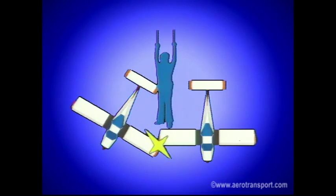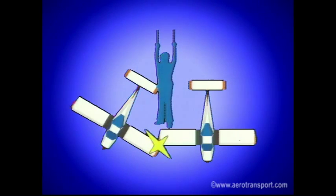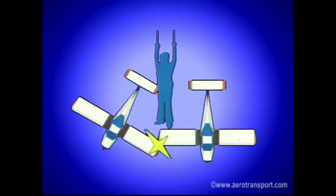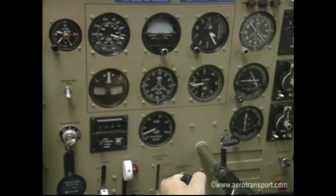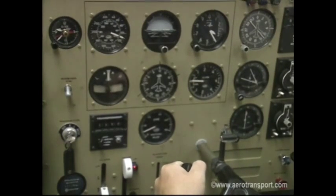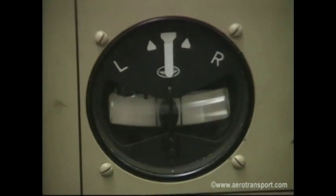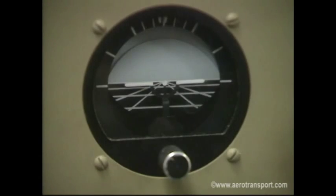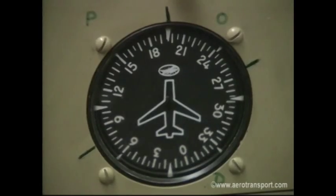Have outside help if you are taxiing on ice, in high winds, or in a crowded area. Keep your eyes on the signalman at all times and obey his signals. Make sure you are familiar with the standard system of marshaling signals. While taxiing in a clear area, there are three instruments you should check: the turn and bank indicator, the attitude indicator, and the heading indicator.